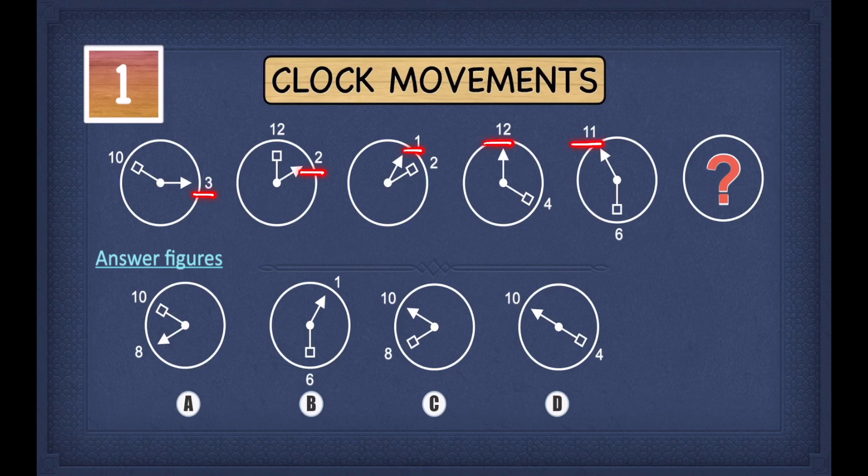Now, we have to find what we have to do to the number on the left to get the number on the right. To get from three to two, we have to take away one. To get from two to one, you have to take away one.